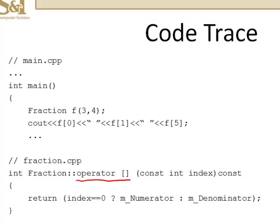So the way we define it is to return an int that's going to be either a numerator or a denominator. It's scoped as a fraction of course. And we pass to it an int called index. It's a const function because it's not going to change anything with the calling object. And what's it going to return?